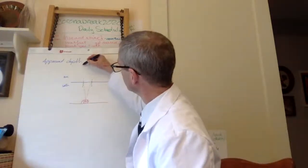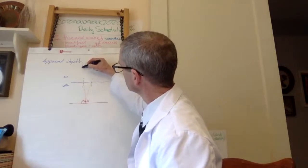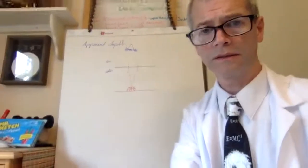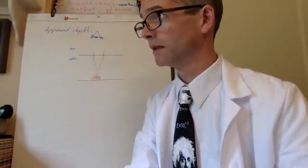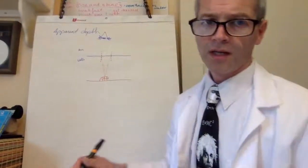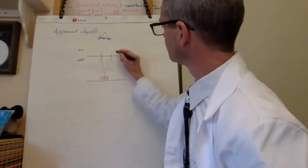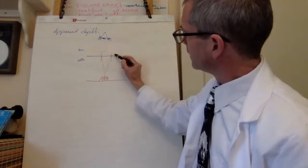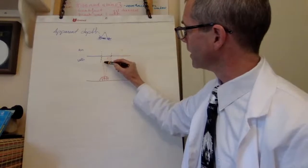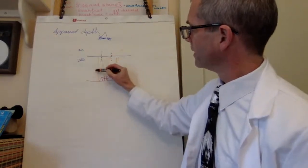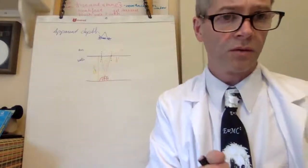So when your eye is up here, the light comes up and bends out — it goes that way. Then these rays, if you follow them back, they look like they're coming from a shallower point. So you end up with a virtual image here, where this is your apparent depth as opposed to your actual depth. So what does that mean? Let's derive that out.